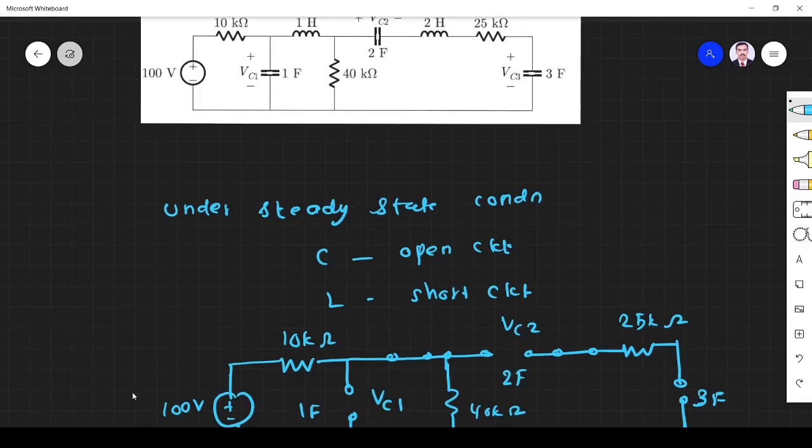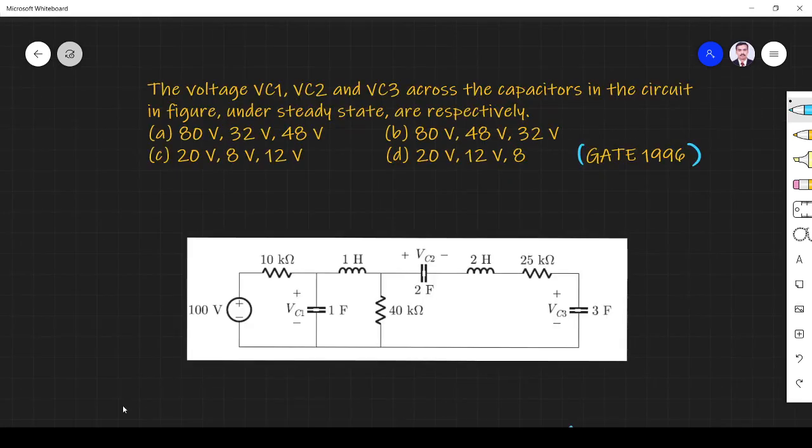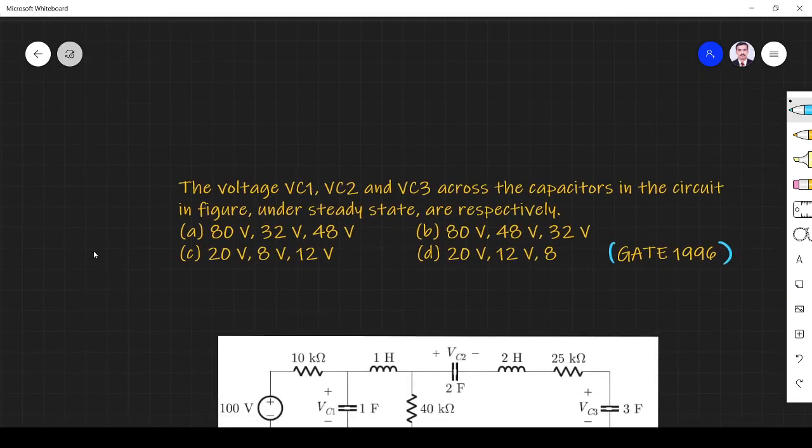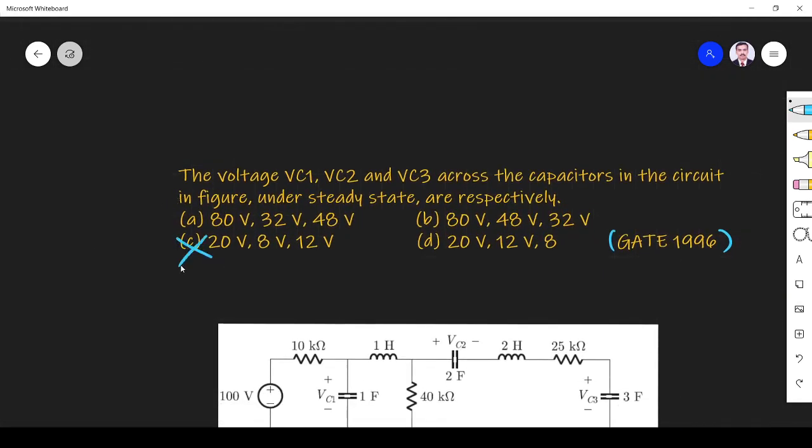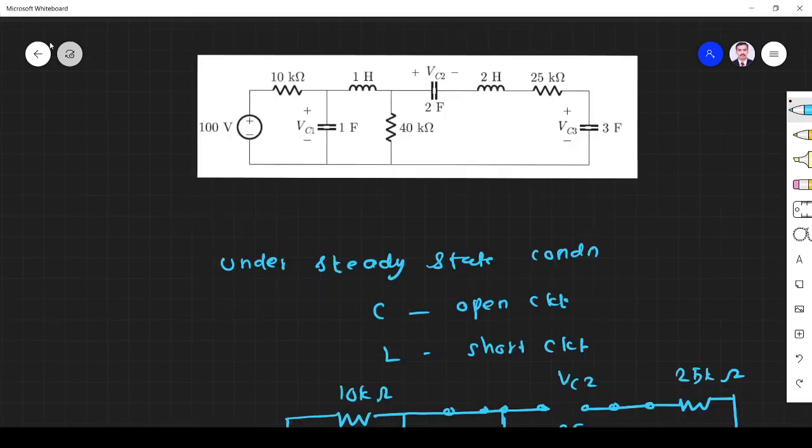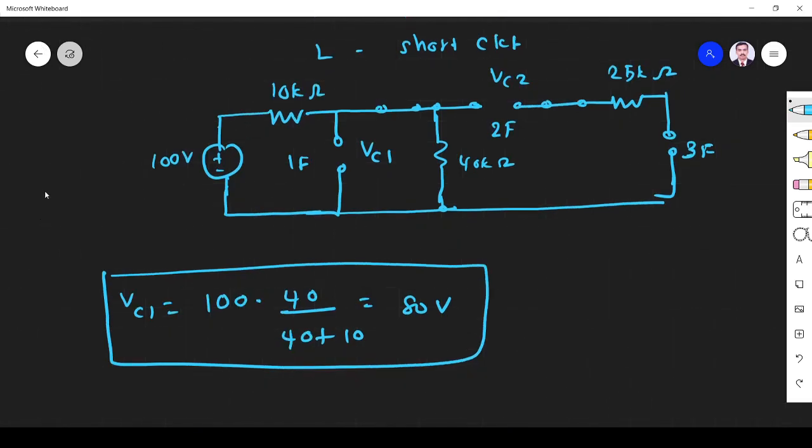VC1 80 volt means, let us see is there any way to find answer immediately. So option C and D are wrong because VC1 is 80, so A and B. Let us see, I have to find VC2.